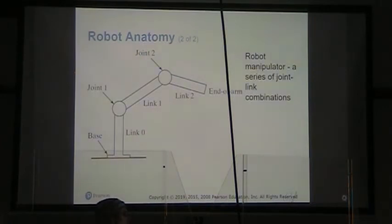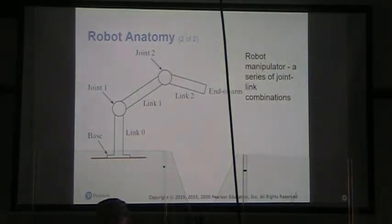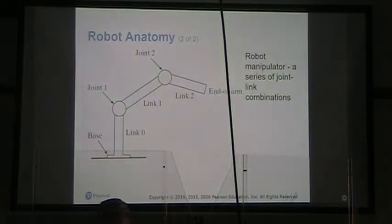Our robot manipulator has two sections: the body and arm for positioning objects in the robot's work volume, and the wrist assembly that orients the objects. We have a base — link 0 — then joint 1 allows link 1 to move relative to joint 0, and joint 2 allows link 2 to move relative to link 1. At the end of the arm we have the wrist assembly and manipulator.